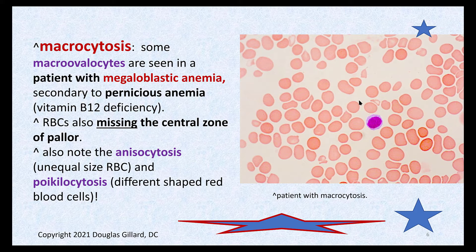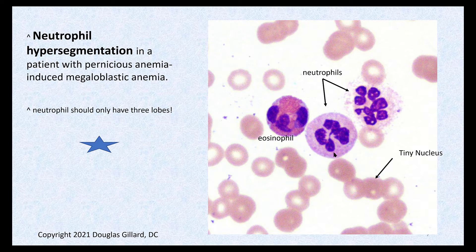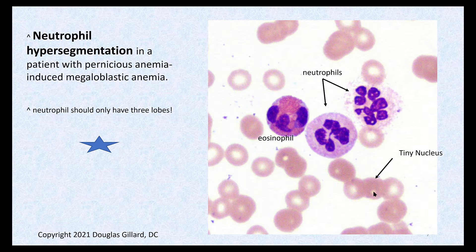Remember: pernicious anemia is caused by vitamin B12 deficiency, but a folic acid deficiency can also cause megaloblastic anemia, and it would look exactly the same. Here's a hyper-segmented neutrophil — normally two or three lobes, but this one has one, two, three, four, five, six, seven, eight lobes. Some red blood cells show a dissociation between the cytosol and what would be the nucleus — called nuclear-cytoplasmic dissociation. That's another sign of megaloblastic anemia.